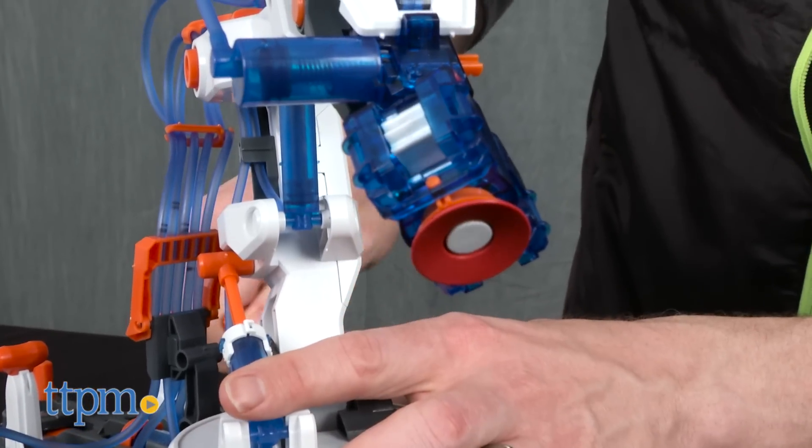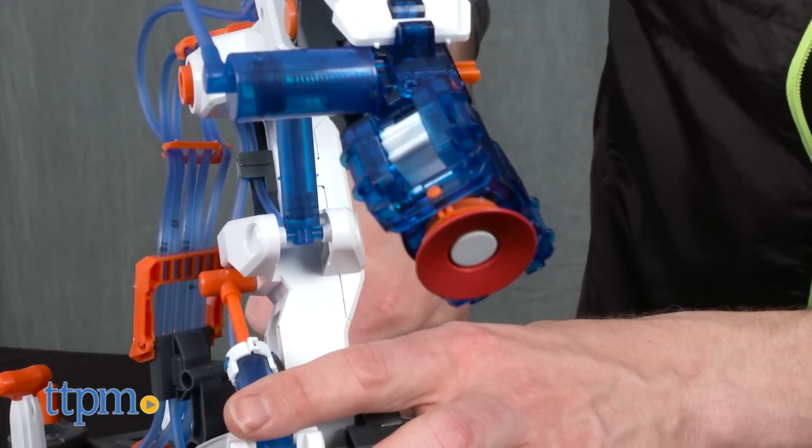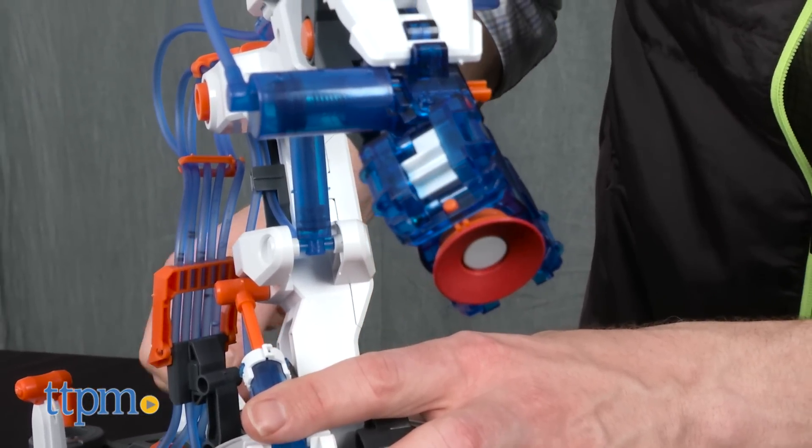The gripper can even be removed to reveal a suction cup, which is extended and contracted with the same hydraulic lever.